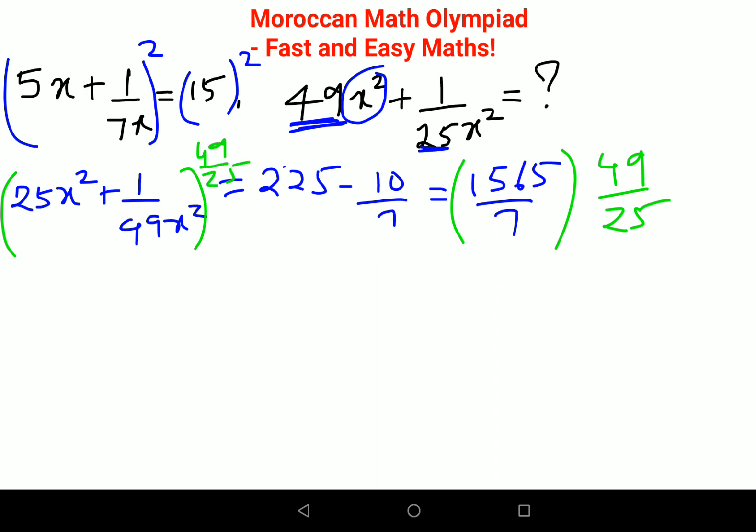So this then becomes, when you multiply 49 upon 25 with 25x square, this cancels, plus 1 upon 49x square when multiplied by 49 upon 25. So again this and this will cancel, and this is 7, and when you see this, 25 fives, and this gets you 313.